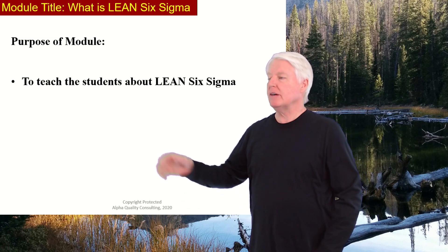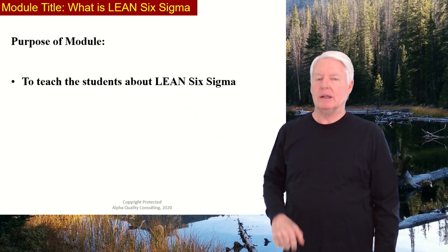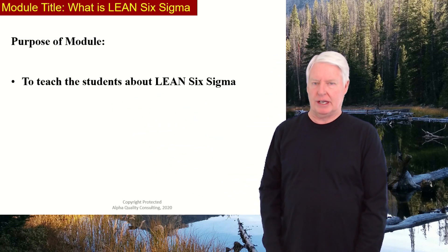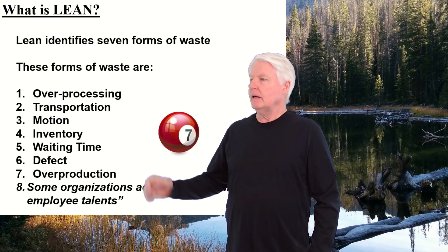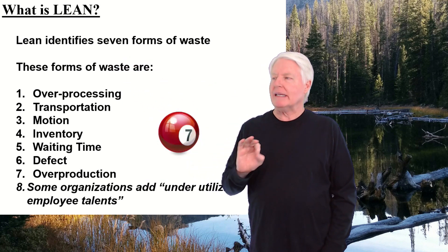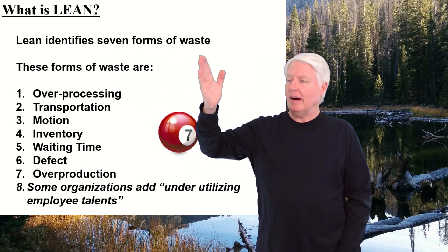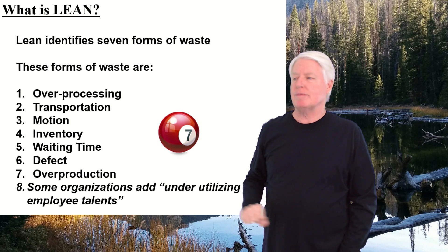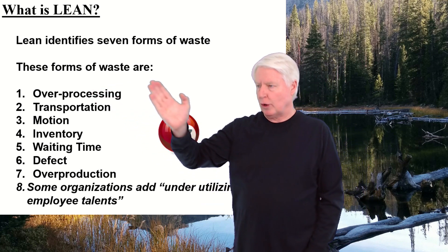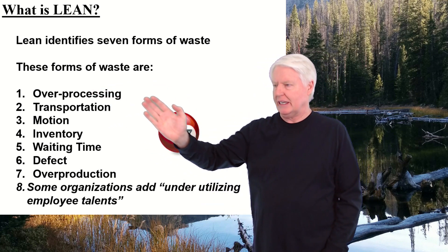The purpose of this module is to teach students about Lean Six Sigma. We'll start with Lean. What is Lean? Lean identifies seven forms of waste. The first form of waste is over-processing.